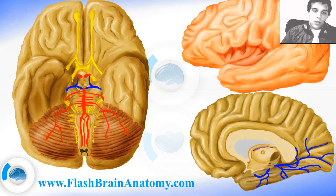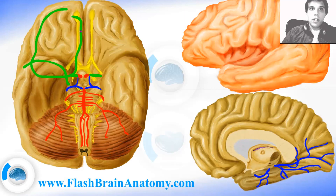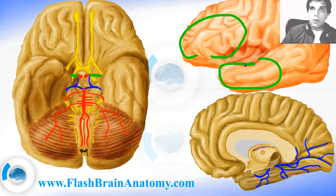Now I will illustrate the middle cerebral artery. It comes from the carotid artery — after the carotid artery joins the posterior communicating artery, it becomes the middle cerebral artery. It enters between the temporal lobe and the frontal lobe of the brain, and exits in the insula between the frontal lobe and the temporal lobe.